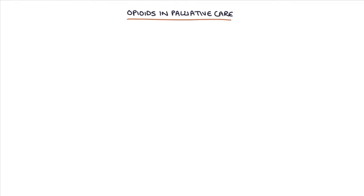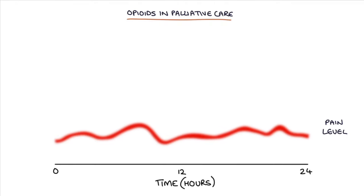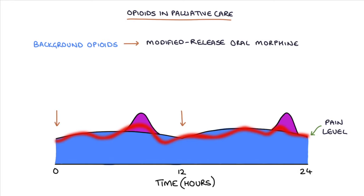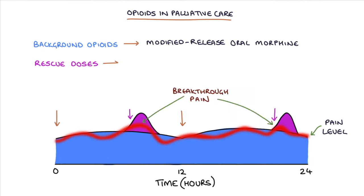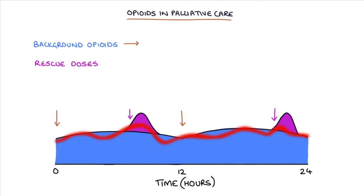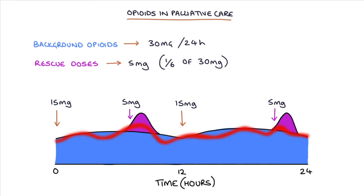Let's talk about the use of opioids in palliative care. Using opioids to control pain in palliative patients is a specific scenario where the doses are titrated and optimised over time. This involves using a combination of background opioids — for example, 12-hourly modified release oral morphine — and rescue doses for breakthrough pain, for example immediate release oral morphine solution. The rescue dose is usually one-sixth of the background 24-hour dose. For example, if a patient is getting 30mg in 24 hours of modified release morphine (15mg every 12 hours), each rescue dose will be 5mg given every 2–4 hours as required.